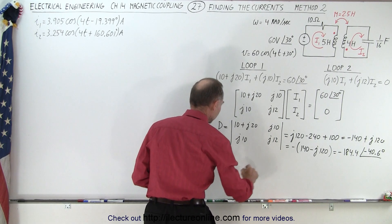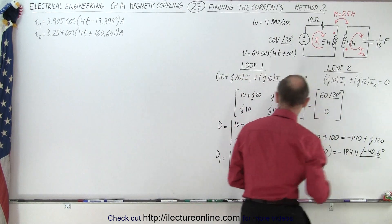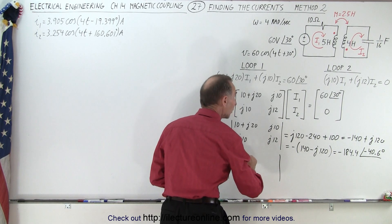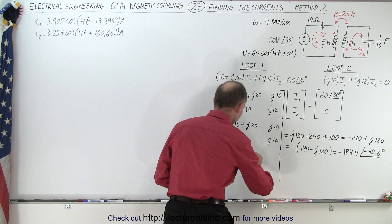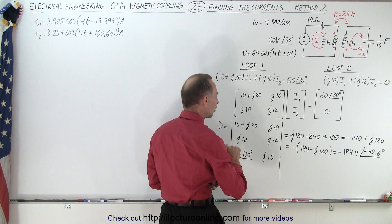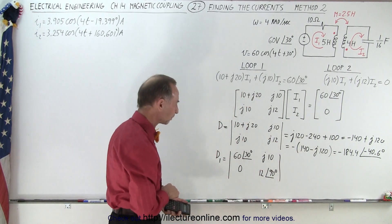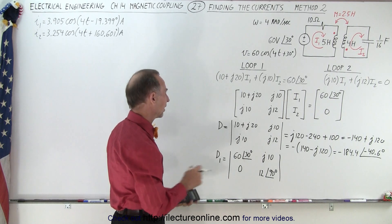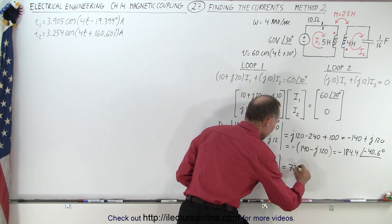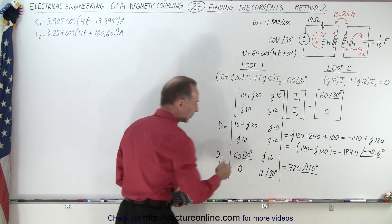Now we find D1, which uses the same determinant but with the first column replaced. We have 60 with an angle of 30 degrees, and 0 here. We have J10 and J12 — that's 12 with an angle of positive 90 degrees, which makes it easier to multiply. So this becomes 12 times 60 equals 720, and when we multiply we add the angles, giving an angle of 120 degrees. Minus 0 when we multiply those elements together.